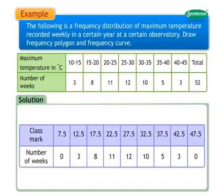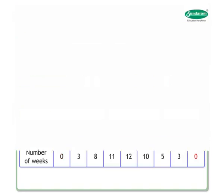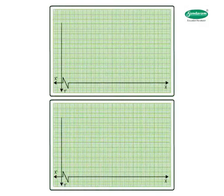For the solution, we first prepare a frequency distribution table with class marks. We add one additional class mark 7.5 preceding the class mark 12.5 with frequency 0, and one additional class mark 47.5 succeeding the class mark 42.5 with frequency 0. Let's draw two graphs simultaneously, then draw the x-axis and y-axis.